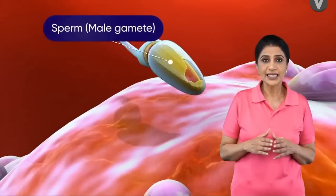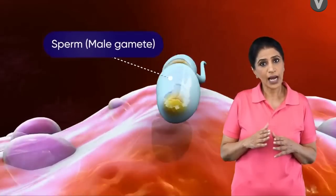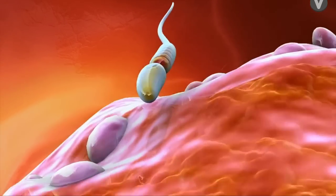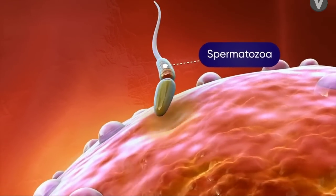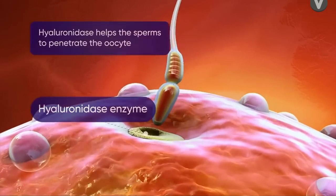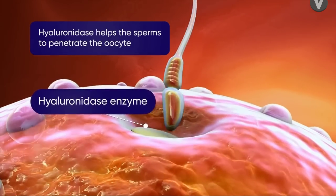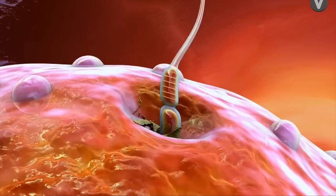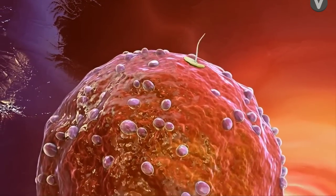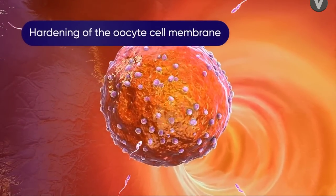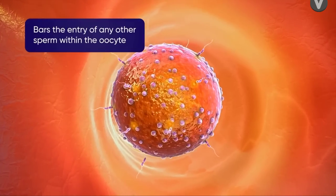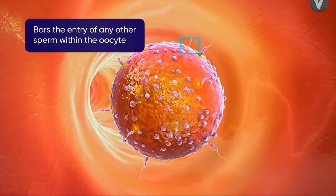Once deposited, the male gametes must swim upwards towards the freshly ovulated ovum. Usually, only a single spermatozoon succeeds in fertilizing the egg. The enzyme hyaluronidase helps the spermatozoon penetrate through the oocyte membrane. Once the body of the spermatozoon enters the oocyte, enzymatic reactions bring about a hardening of the oocyte cell membrane. This important step bars the entry of any other sperm within the oocyte.